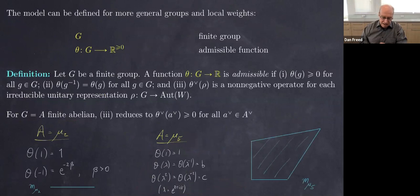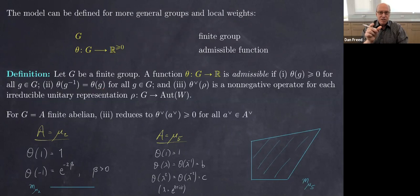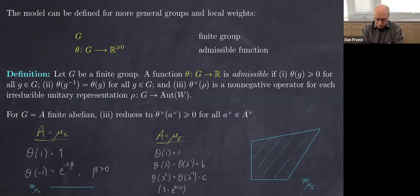We can do this for a general group and a function. What do we need about that function? We want the function to be even — since we're taking the ratio at the ends of an edge without orienting it — and it must be a weight in the statistical mechanical sense, so we ask that the function be positive. We also ask that its Fourier transform be positive. In the non-abelian case there's an analogous kind of Fourier transform.